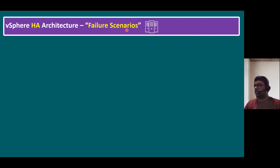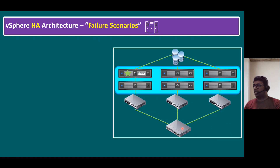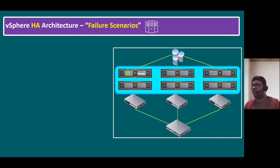vSphere HA failure scenarios — within our architecture when we enable the HA feature, FDM agent starts on all hosts. In this diagram we have six ESXi hosts with one master host, and we also require network switches, routers, firewalls, and shared datastores. You can configure multiple shared datastores — for example, one dedicated for test VMs, one for development VMs, and one for production.